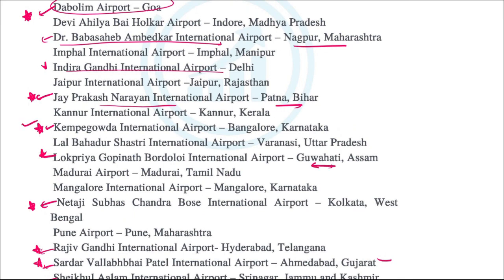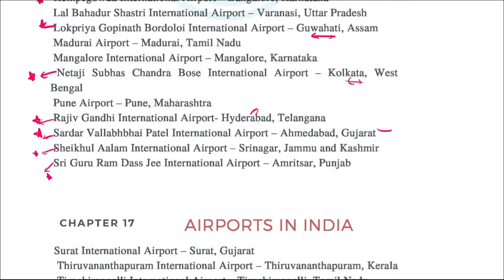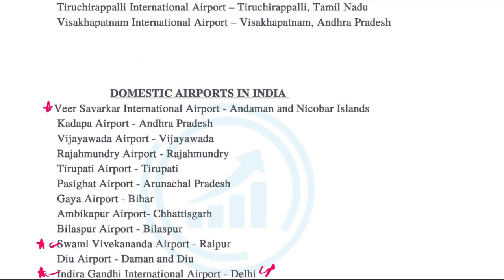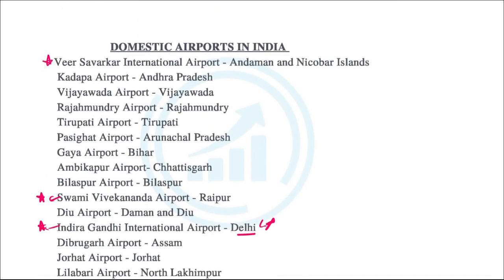Guwahati Airport is Lokpriya Gopinath Bordoloi Airport. Kolkata Airport is Netaji Subhas Chandra Bose Airport. Then RGI in Hyderabad is Rajiv Gandhi International Airport. Ahmedabad has Sardar Vallabhbhai Patel International Airport. Srinagar has Sheikh ul-Alam International Airport, and Amritsar has Shri Guru Ram Dass Jee International Airport.